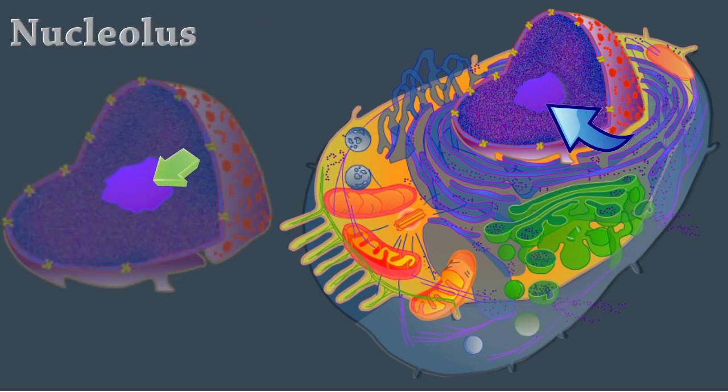The nucleolus is a small, dense body within the nucleus. It's composed of ribosomal RNA and proteins, and it's the site of ribosome subunit manufacture. Nucleoli also assemble signal recognition particles and play a role in the cell's response to stress.